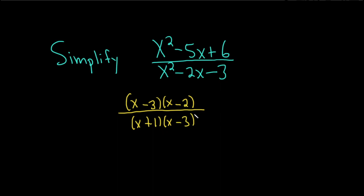You can see that negative 3 plus 1 is negative 2, and 1 times negative 3 is negative 3. Everything looks okay. We're allowed to simplify this. We can cancel the x minus 3's,